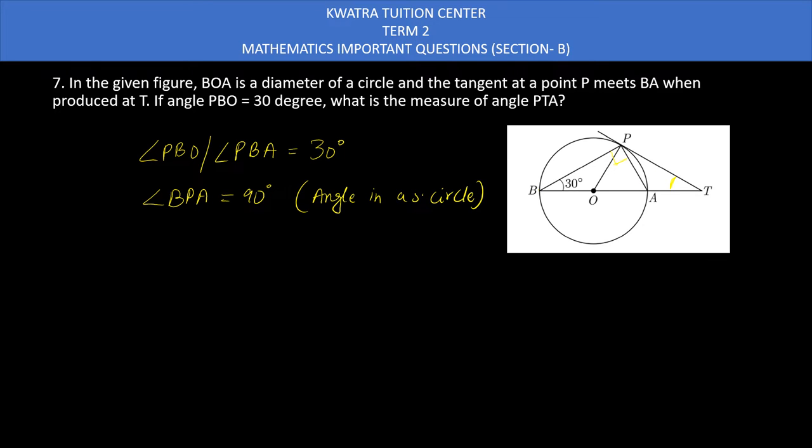Then you can see that radius and tangent meet at 90 degrees. Like you can see OPT here. Angle OPT is 90 degrees. Why 90 degrees? Because OP is the radius and PT is a tangent. So yes, you can write that angle OPT is 90 degrees. Why? You can write that the angle between radius and tangent is 90. They are perpendicular to each other.